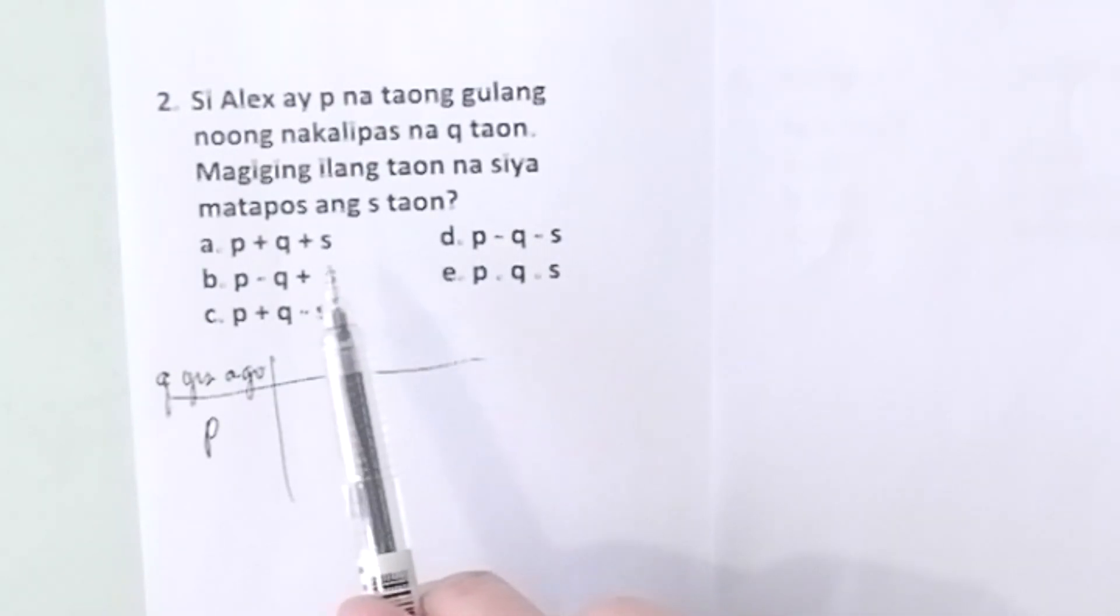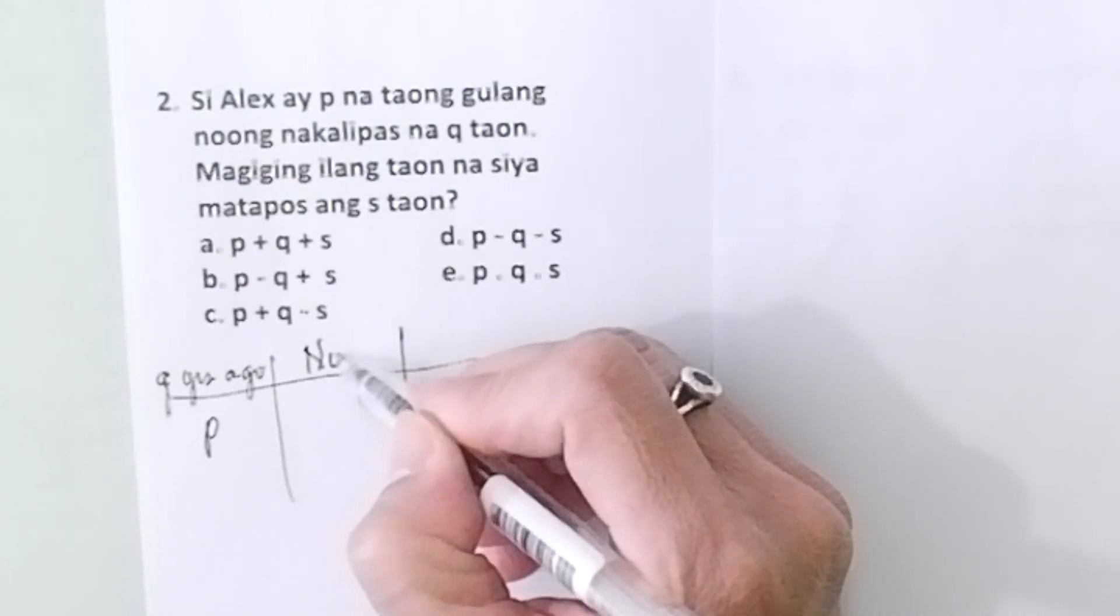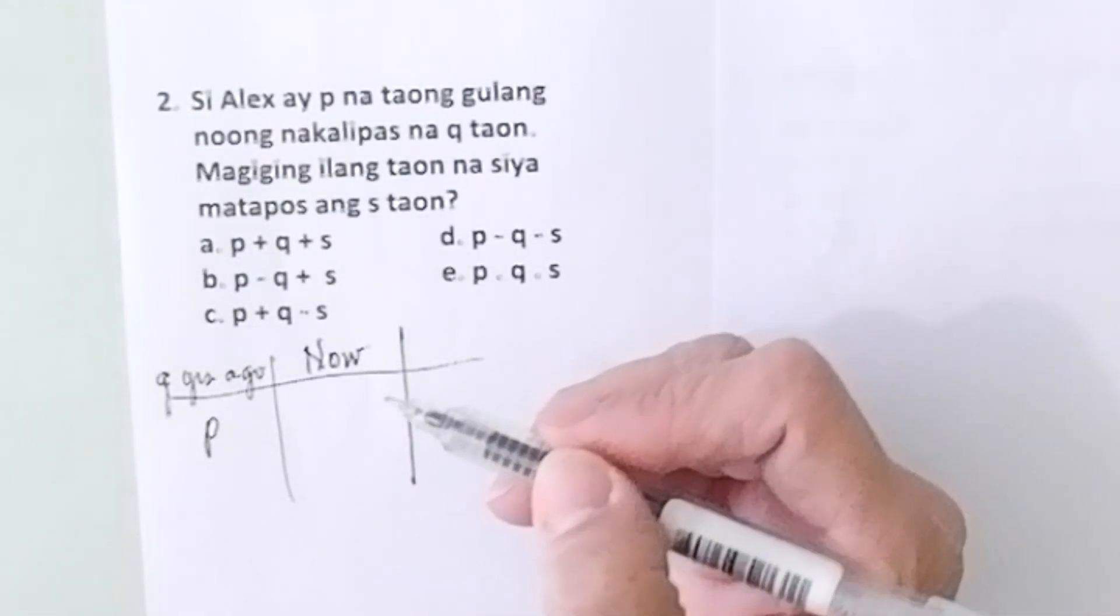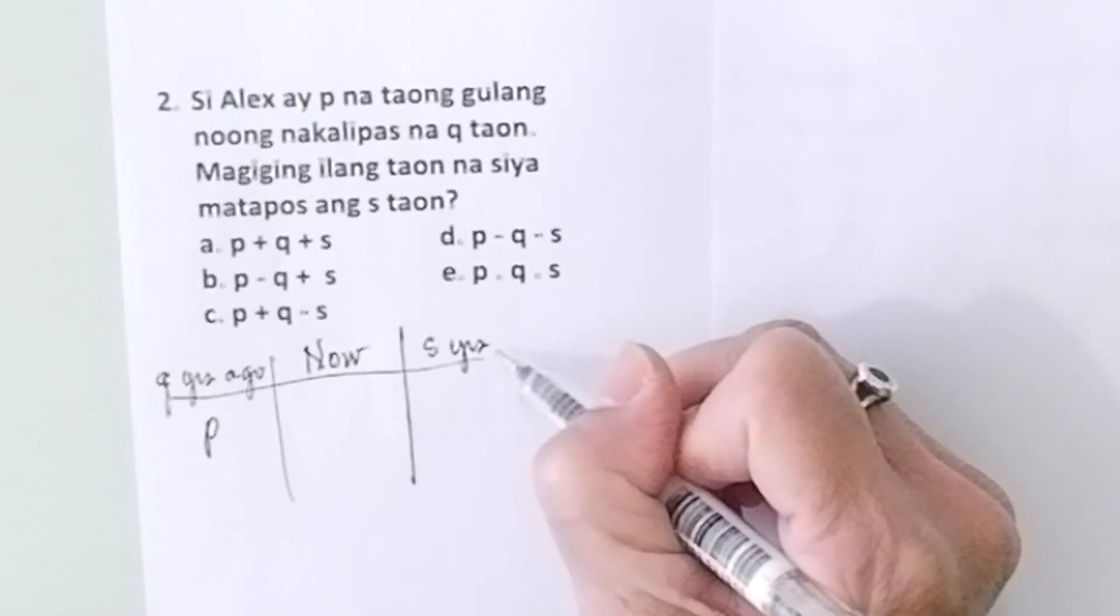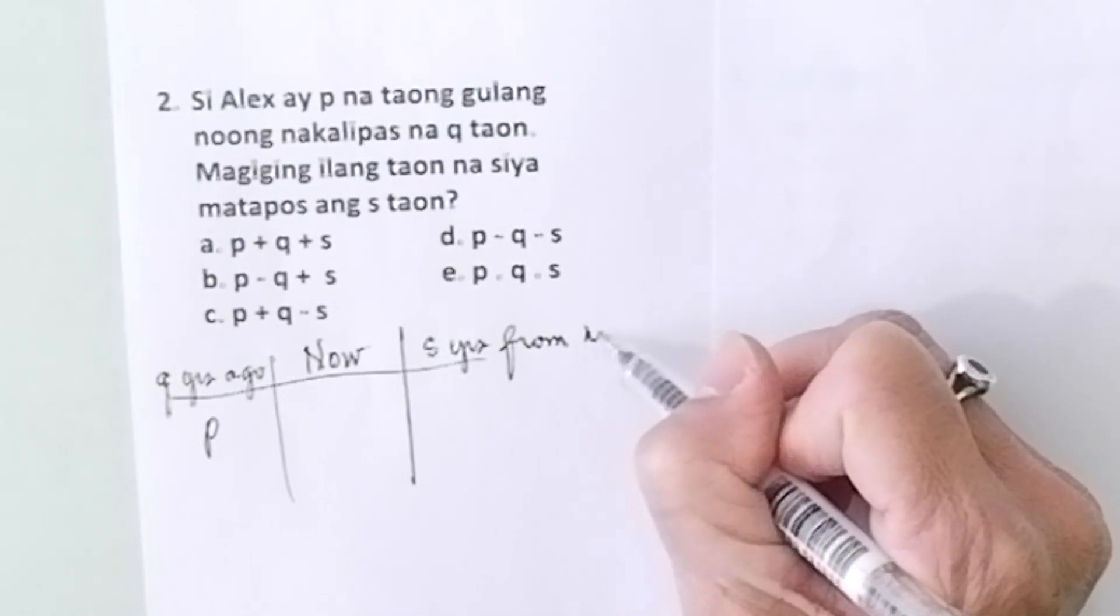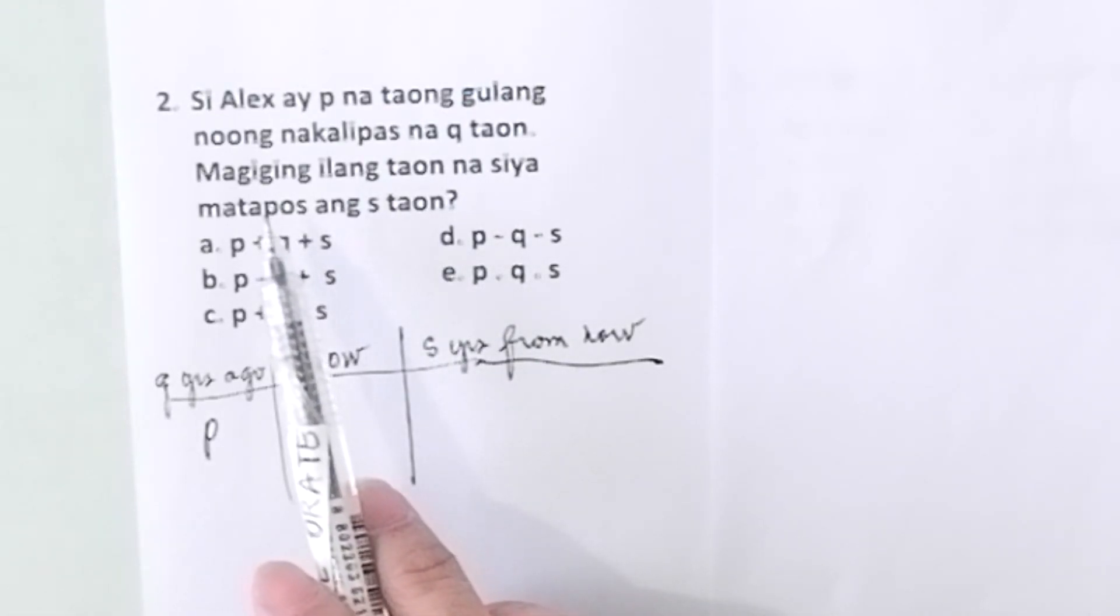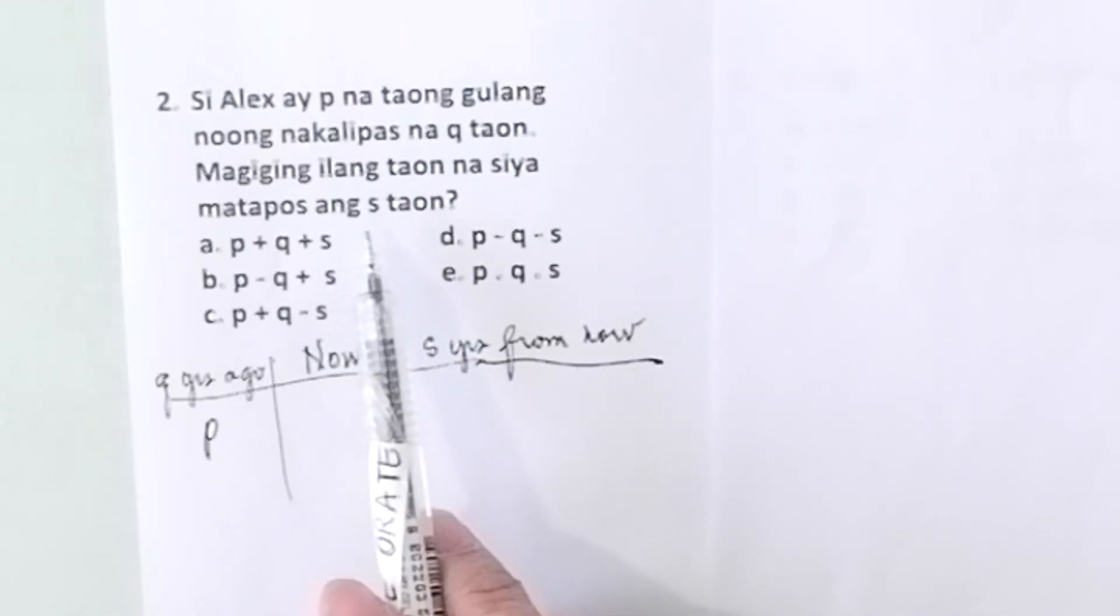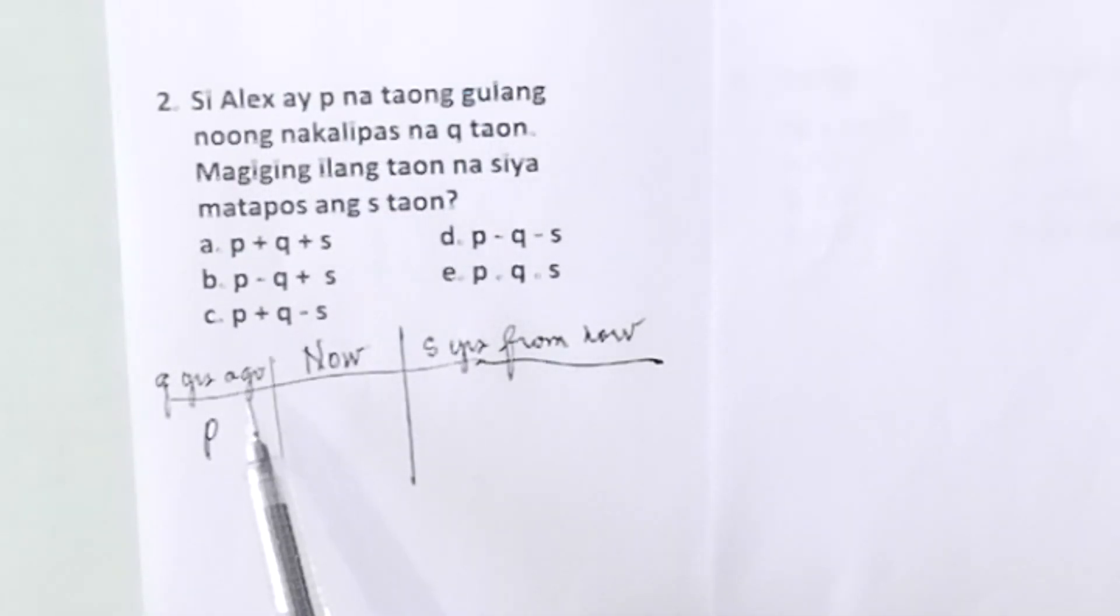Magiging ilang taon na siya matapos ang S na taon? So now let's get his age now and his age S years from now. How old will he be S years from now? Let's repeat: Alex was P, Q years ago. Here Q years ago, he was P.